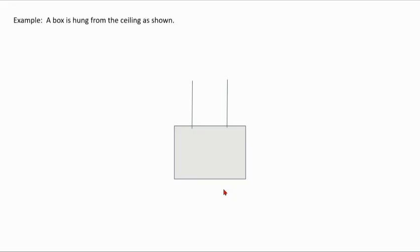Here's an example. A box is hung from a ceiling. What forces are on the box? We know that gravity, as all things on Earth, are pulled towards the center of the Earth by gravity. But what's holding the box up? There's no surface this time like there was with the cow.